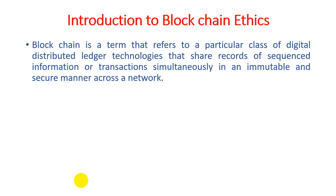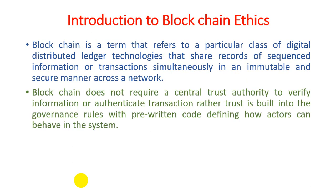Blockchain does not require a central trust authority to verify information or authenticate transactions. Rather, trust is built into the governance rules with pre-written code defining how actors can behave in the system. Similar to how we discussed AI ethics in the previous lecture — if any company is creating an AI robot or converting human processes into machines, they need to follow rules to use emerging technology in a proper and ethical method.